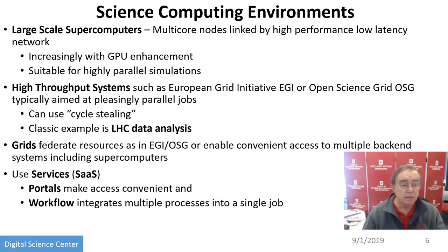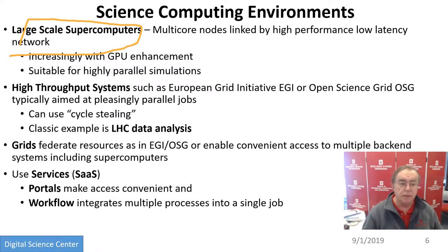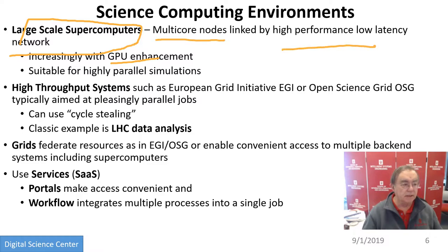If we look at what science uses, it uses some large-scale supercomputers. They're multi-core, high-performance nodes, often with GPU enhancement or Knights Landing enhancement. They have high-performance, low-latency networks, and they're very suitable for simulations, but also pretty suitable for machine learning, although they may not be optimized for machine learning.